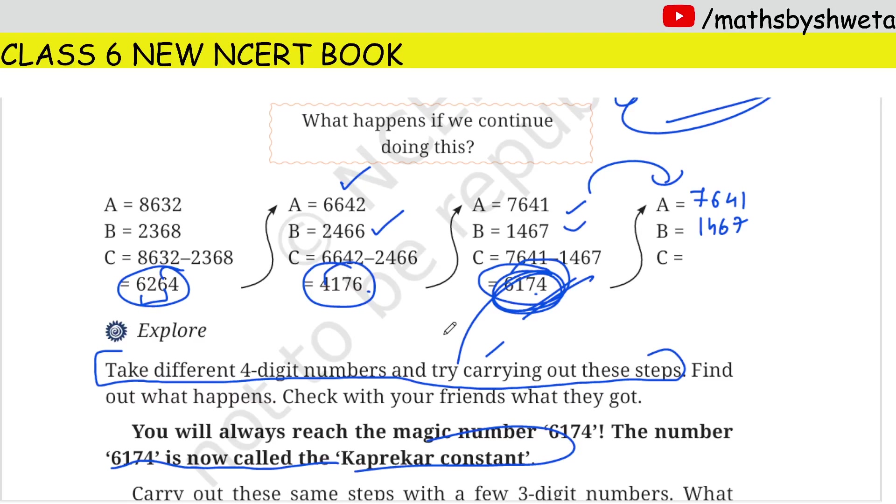Try to make sure to take one number here. 9632. This is my largest which I have, A. It will be B, 2369.